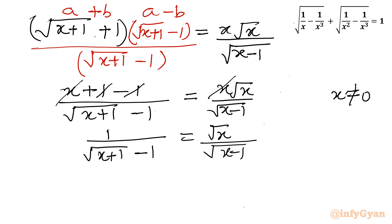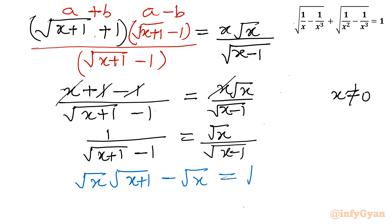Now I will cross multiply the written terms. So I can write: square root of x times square root of (x + 1) minus square root of x equals square root of (x − 1).